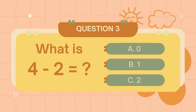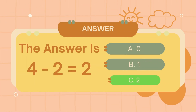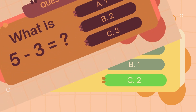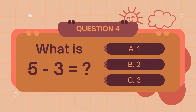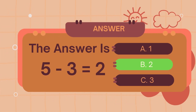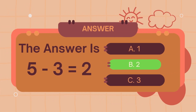What is 4 minus 2? The answer is 2. What is 5 minus 3? The answer is 2.